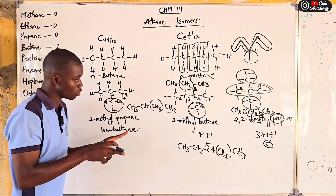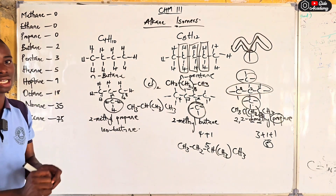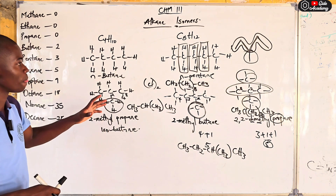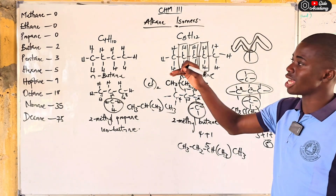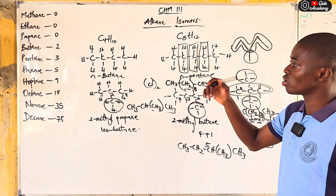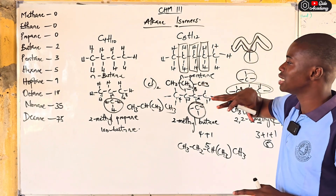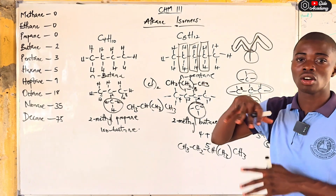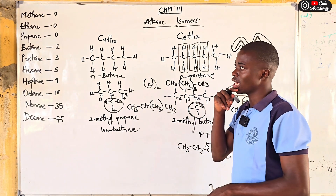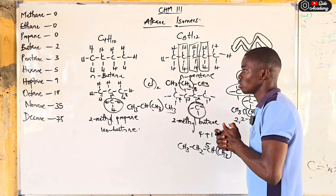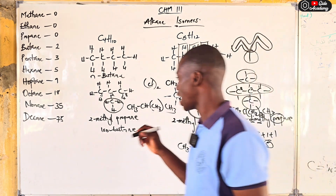As noted: methane has zero isomers, propane has zero isomers. As the number of carbon atoms increases, the number of isomers also increases. This is a general overview of structural isomerism of alkanes. For more detail refer to your secondary school textbook. The trick to verify an isomer is to count all the carbons — the main chain plus all methyl branches — and confirm the total matches the expected molecular formula.